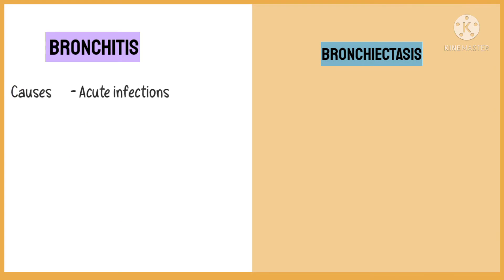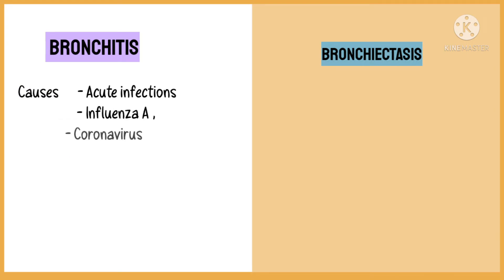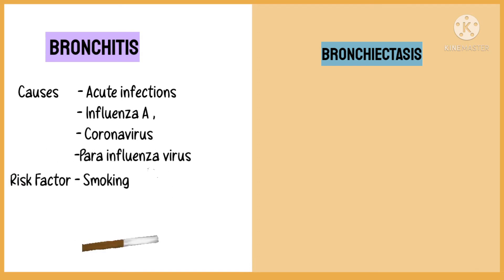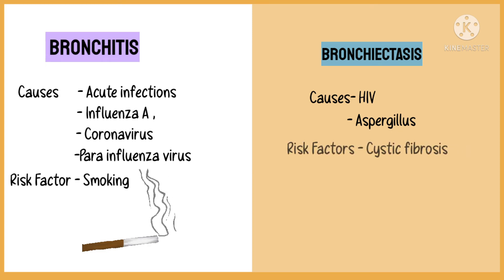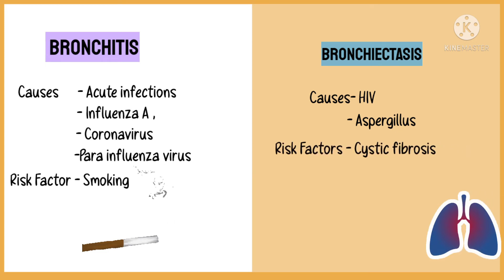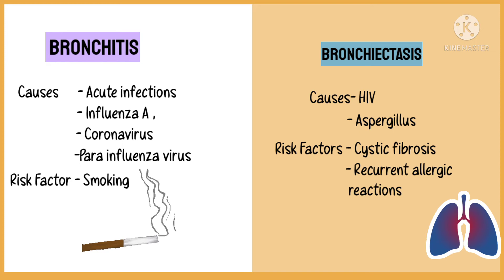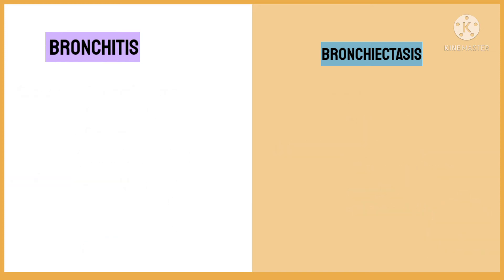Bronchitis occurs due to acute infections like influenza A virus, coronavirus, and parainfluenza virus, and smoking is a risk factor. Bronchiectasis, on the other hand, is caused by chronic infections like HIV and Aspergillus. People who suffer from cystic fibrosis, have recurrent allergic episodes, or have had pneumonia are also prone to this disease.